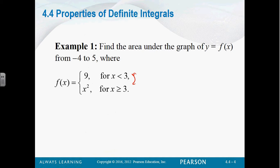Because I can't do a piecewise function from negative 4 to 5 because the pieces change. Anytime your function changes in the middle of your interval, you're going to have to break it up into multiple integrations. So if I want to find the area under the graph of 9, I just integrate 9 with respect to x — 9 dx. Now, what part of the interval from negative 4 to 5 can I integrate over? To 3, because that's as far as that function goes.